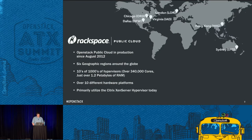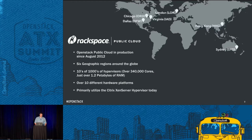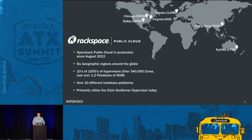A little bit about Rackspace. Our OpenStack public cloud has been in production since August of 2012. We have six regions across the world. We have tens of thousands of hypervisors and over ten different hardware platforms, and primarily we utilize Citrix Xen Server on our virtualization product today.